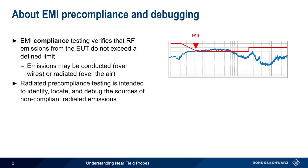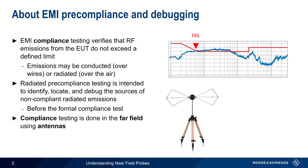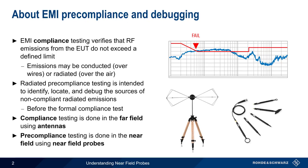Radiated pre-compliance testing is a procedure used to identify, locate, and debug the sources of these non-compliant radiated emissions. This should be done before the formal compliance test, since catching EMI-related problems early can save significant time and money. Radiated compliance testing is done in the far field using antennas, but radiated pre-compliance testing is normally performed in the near field using near field probes.